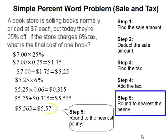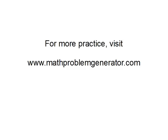And this completes our problem. The final price for one book after the 25% discount and 6% tax is $5.57.